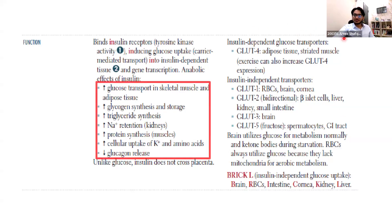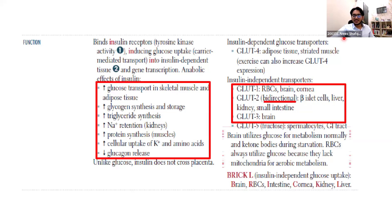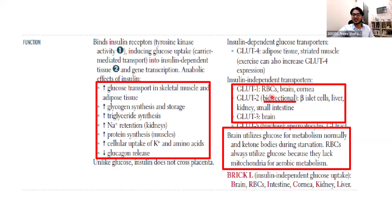The main important thing to know: GLUT1 is in RBCs and brain — insulin-independent; GLUT2 is in the liver — insulin-independent; GLUT3 is in the brain — insulin-independent; GLUT4 is in adipose tissue and striated muscle — insulin-dependent glucose transporter.